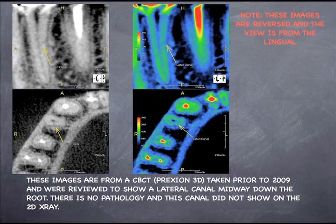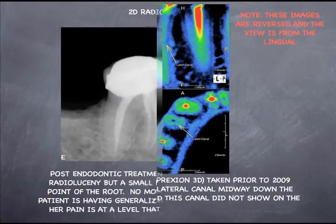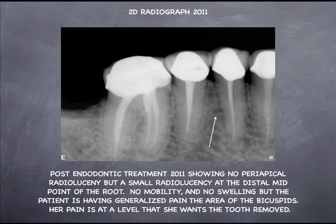Note that these images are reversed — on the CBCT scan, the way my machine is set up, you're actually looking at these teeth in the sagittal section from the lingual view, so it's going to look opposite from a periapical taken from the buccal surface. Fast forwarding to 2011, you can see a little bit of radiolucency out the side, and in the endofill there's really no sealer coming out the side. The only suspicious finding is that little bit of widening to the distal of what we've identified as that lateral canal.